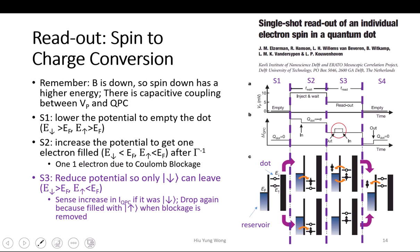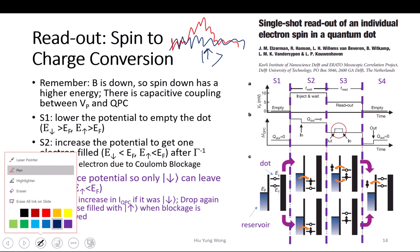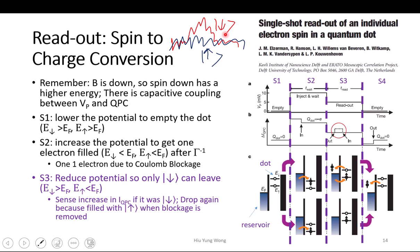If it is spin up, you will see a bump in the current. If it is spin down, it will be just constant. You can take a look at this paper — they have the experimental result. It won't be that nice, but you clearly see that the signal-to-noise ratio is high enough. So you will see something like this for spin up, and something like this for spin down. And based on this, they know this is spin down, this is spin up, and this is spin down.